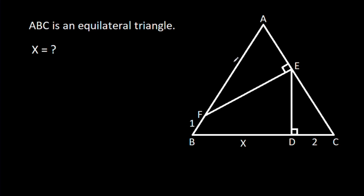In this video, we have been given that ABC is an equilateral triangle, FE is perpendicular on AC, and ED is perpendicular on BC. BF is 1, CD is 2, and BD is X. We have to find X.